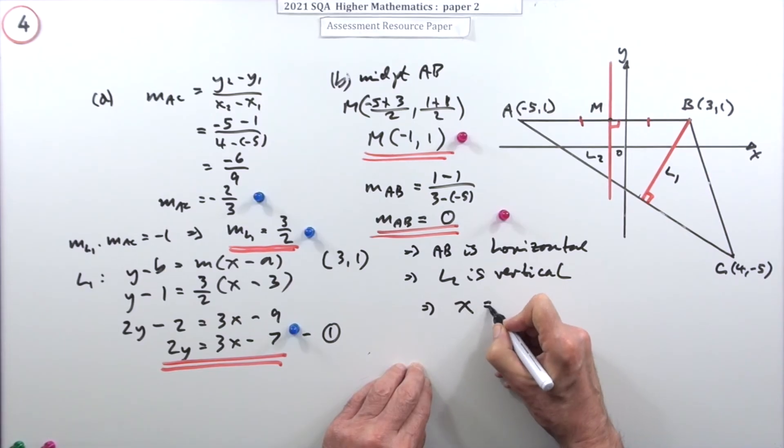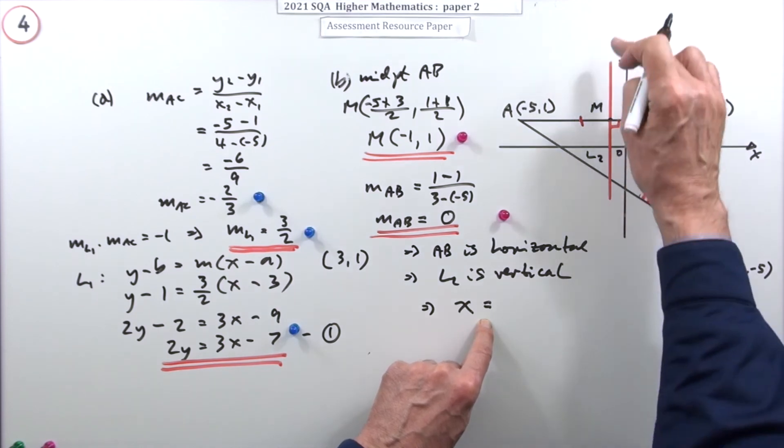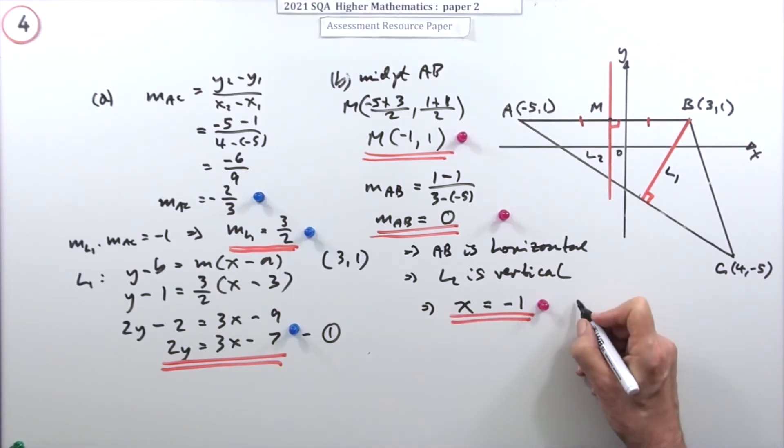Verticals - I would say better than saying gradient undefined - L2 is vertical, in which case its equation is going to be x equals whatever the x coordinate of any point on it is, because all the x coordinates are the same. So x = -1. That's worth a mark. So that was line 2, let's call it 2 anyway.